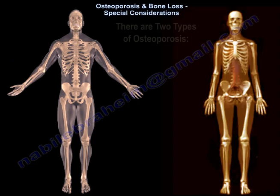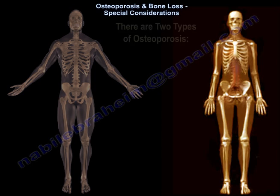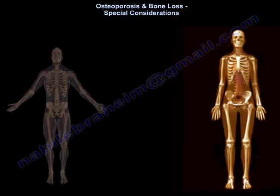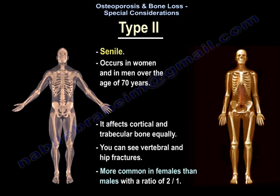There are two types of osteoporosis. Type 1, postmenopausal, occurs within 15 to 20 years after menopause; it affects trabecular bone with an increased risk of vertebral and wrist fractures. Type 2, senile, occurs in women and men over age 70; it affects cortical and trabecular bone equally, with vertebral and hip fractures more common in females than males at a ratio of 2 to 1.